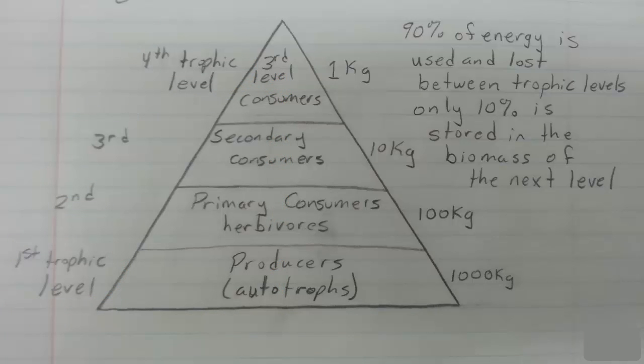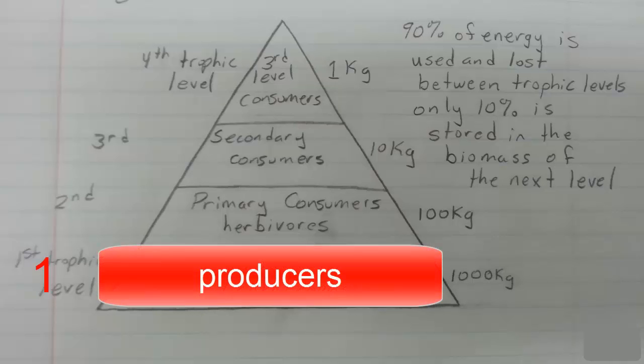A food chain always starts with trophic level 1, and trophic level 1 is always placed at the bottom of the pyramid. This level is occupied by producers, who capture radiant energy and convert it into chemical bond energy, which makes it available to the rest of the trophic levels as it passes through the food chain.